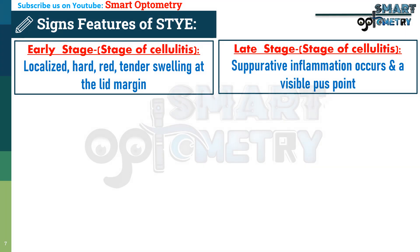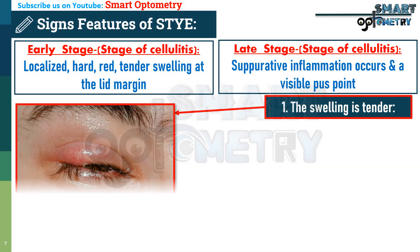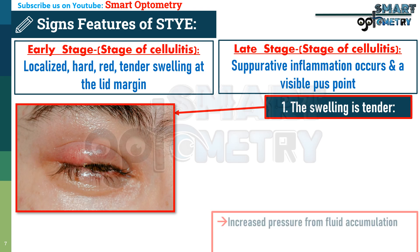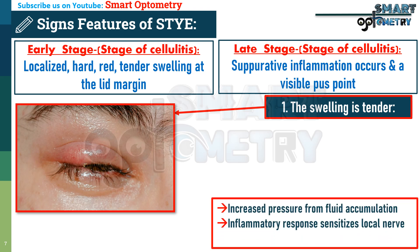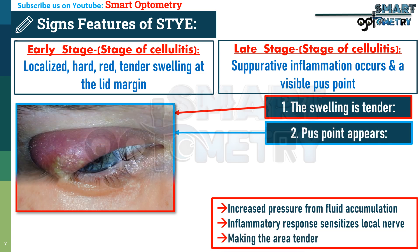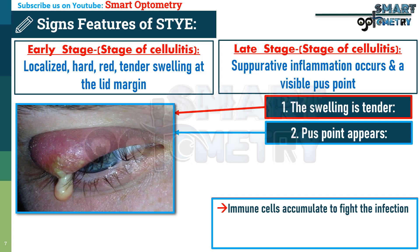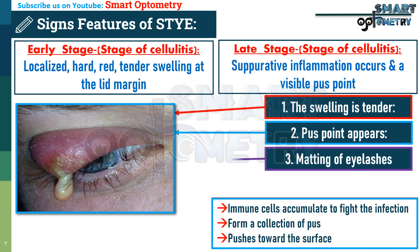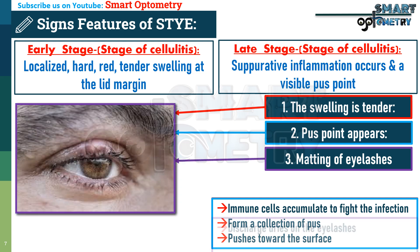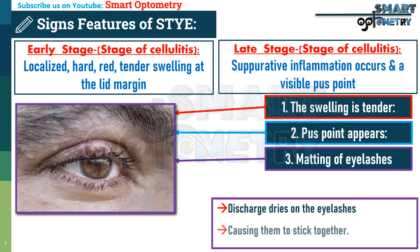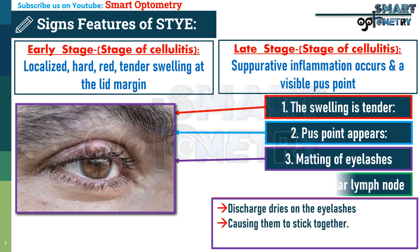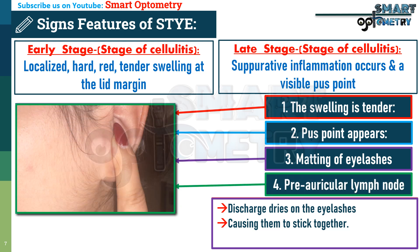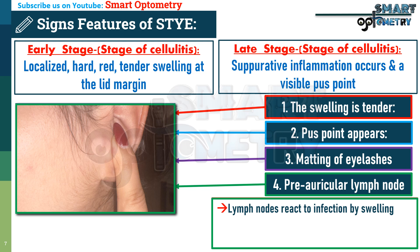The late stage of abscess formation leads to the following signs: tender swelling from increased pressure and inflammatory sensitization of local nerve endings; appearance of a pus point as immune cells accumulate and push pus toward the surface; matting of eyelashes as discharge from the infection dries and causes them to stick together; and enlargement of the preauricular lymph node as nearby lymph nodes swell in response to filtering pathogens.